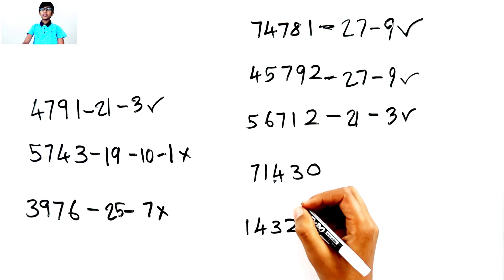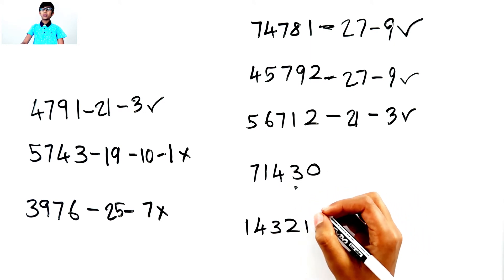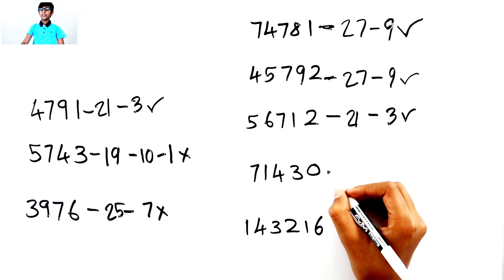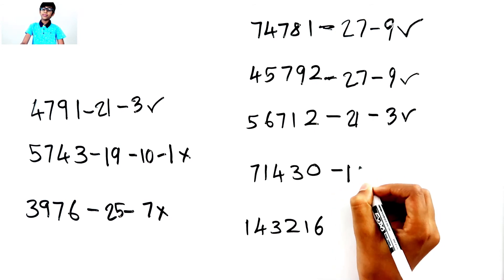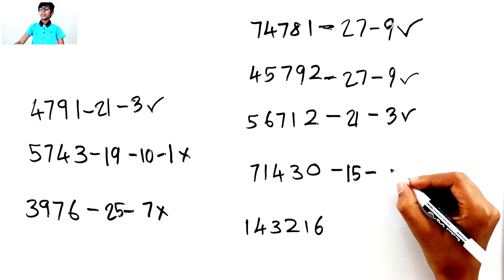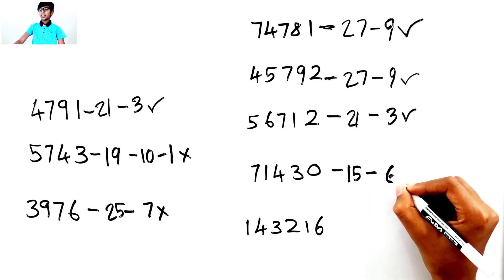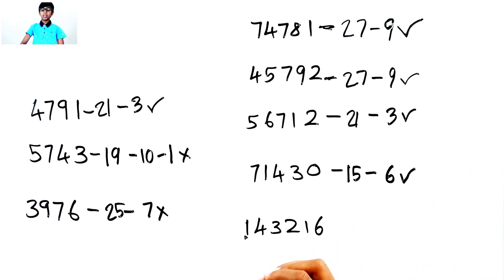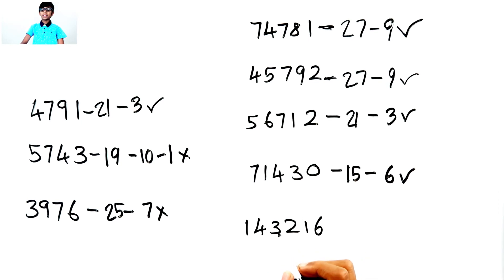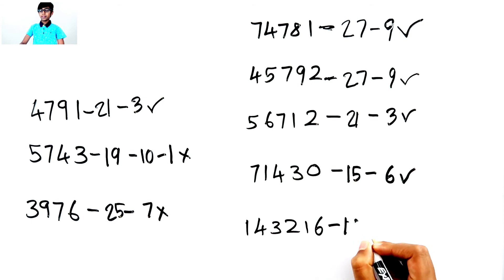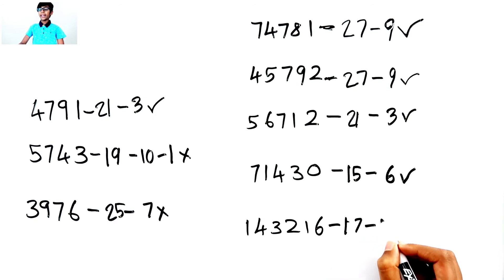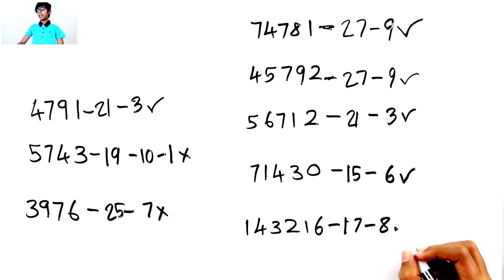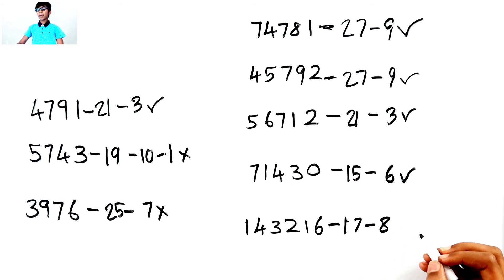7 plus 1. 8. 8 plus 4. 12. 12 plus 3. 15. 15 plus 0 is 15. So, 1 plus 5. 6. Then 1 plus 4 is 5. 5 plus 3. 8. 8 plus 2. 10. 10 plus 1. 11. 11 plus 6 is 17. 1 plus 7 is 8. So, this number can't be divided by 3.